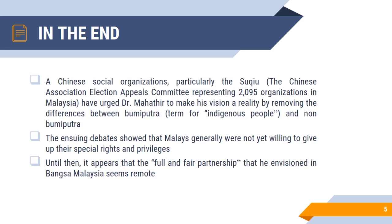Since there were conflicting ideologies, a Chinese social organization urged Dr. Mahathir to make his vision a reality by removing the differences between Bumiputra, or indigenous people, and non-Bumiputra. However, the ensuing debate showed that Malays were generally not yet willing to give up their special rights and privileges, making a Bangsa Malaysia unlikely in the near term.